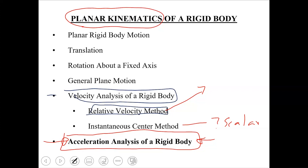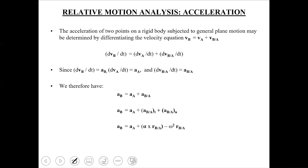We have seen velocity, which we can relate to acceleration. So how do we relate acceleration to the rigid body undergoing general plane motion? We considered two points when discussing relative velocity analysis. We said that we have a rigid body which, at time t, is shown in this position. These are its two points, A and B.